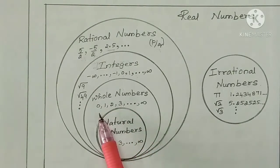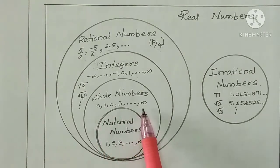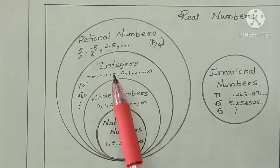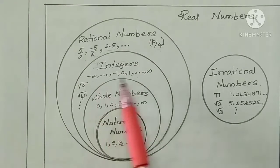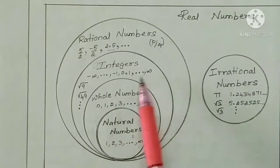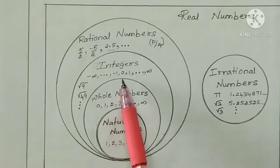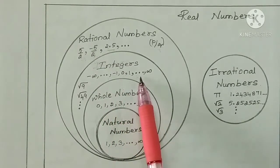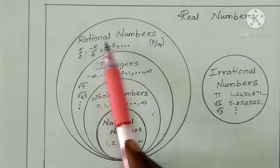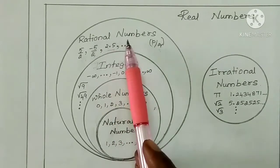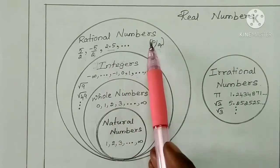Whole numbers: what values start from 0, up to infinity. Then integers — that is in a set format.